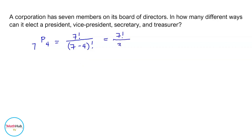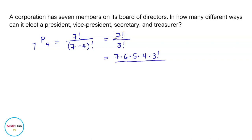So this is equal to seven factorial divided by three factorial. We write seven factorial as seven times six times five times four times three factorial, and copy the denominator which is three factorial. We can cancel three factorial in both numerator and denominator, then multiply seven times six times five times four, which is equal to 840.